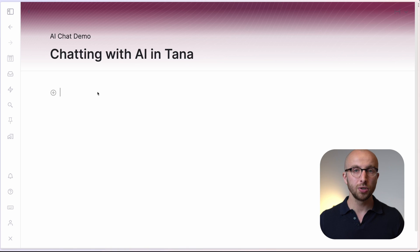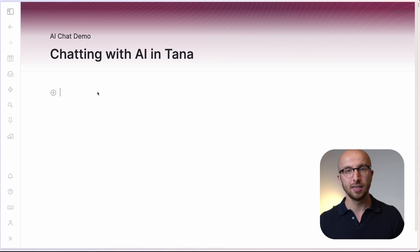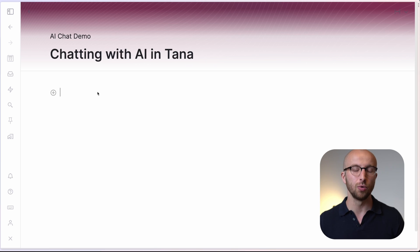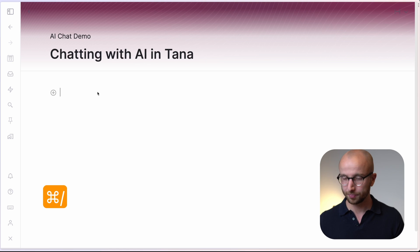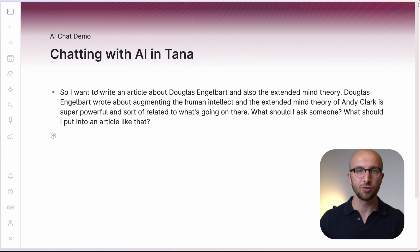So I want to write an article about Douglas Engelbart and also the extended mind theory. Douglas Engelbart wrote about augmenting the human intellect, and the extended mind theory of Andy Clark is super powerful and sort of related to what's going on there. What should I put into an article like that? I hit the shortcut once and twice, and now I have this directly translated, ready to go as text in Tana.